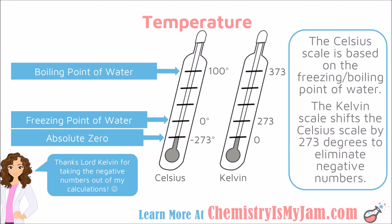Kelvin, as a temperature scale, is new to many chemistry students. So let's talk about where these temperature scales that we use in chemistry come from. We're going to begin with the Celsius scale. The Celsius scale is based off of water. Scientists said water freezes at this temperature, we're going to call that zero. Water boils at this temperature, we're going to call that 100. And everything else was incremented in between.